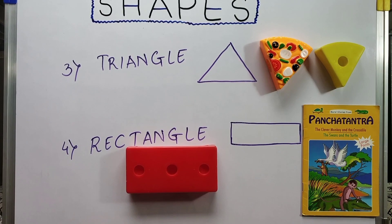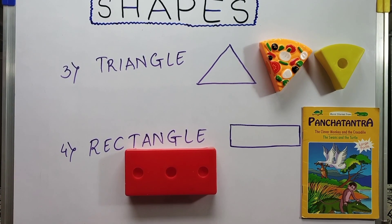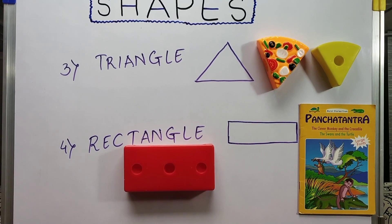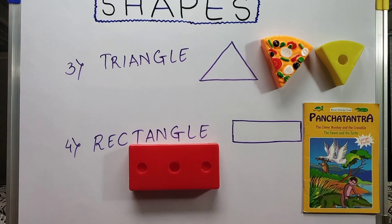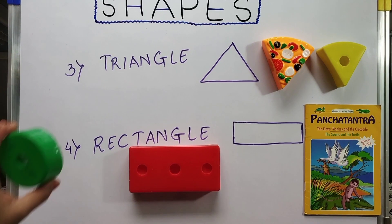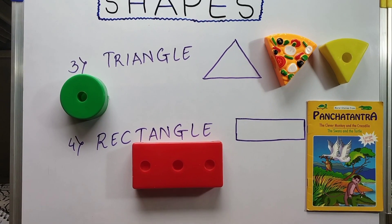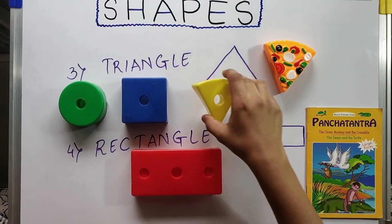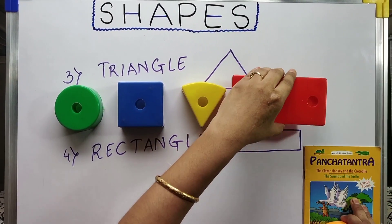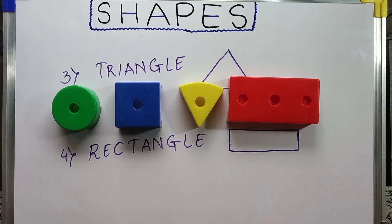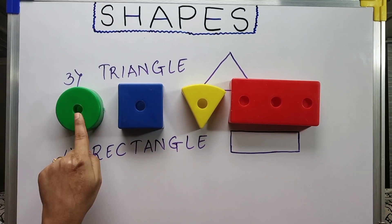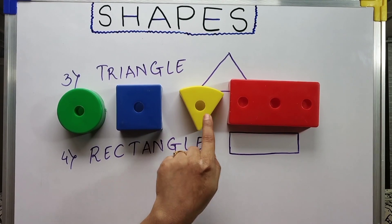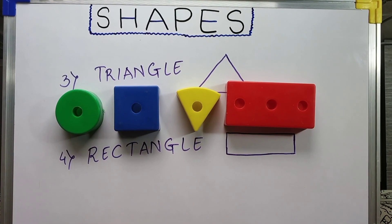Just remember one thing: introduce shapes in this order only. First introduce a circle, then a square, then a triangle, and at the end a rectangle. Just follow this order — circle, square, triangle, and then rectangle.